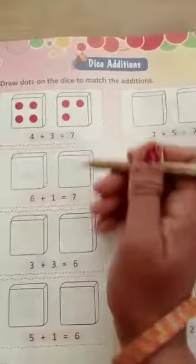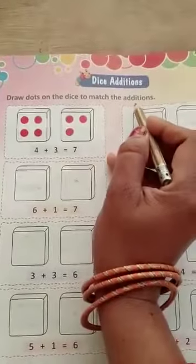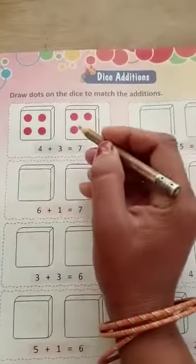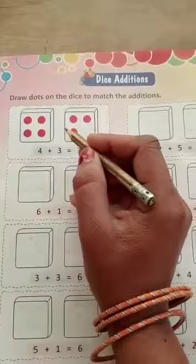Dice, you know? We play ludo at home. That's what we call the dice. Now, draw dots on the dice to match the additions. Here we have to draw the dots on the dice.